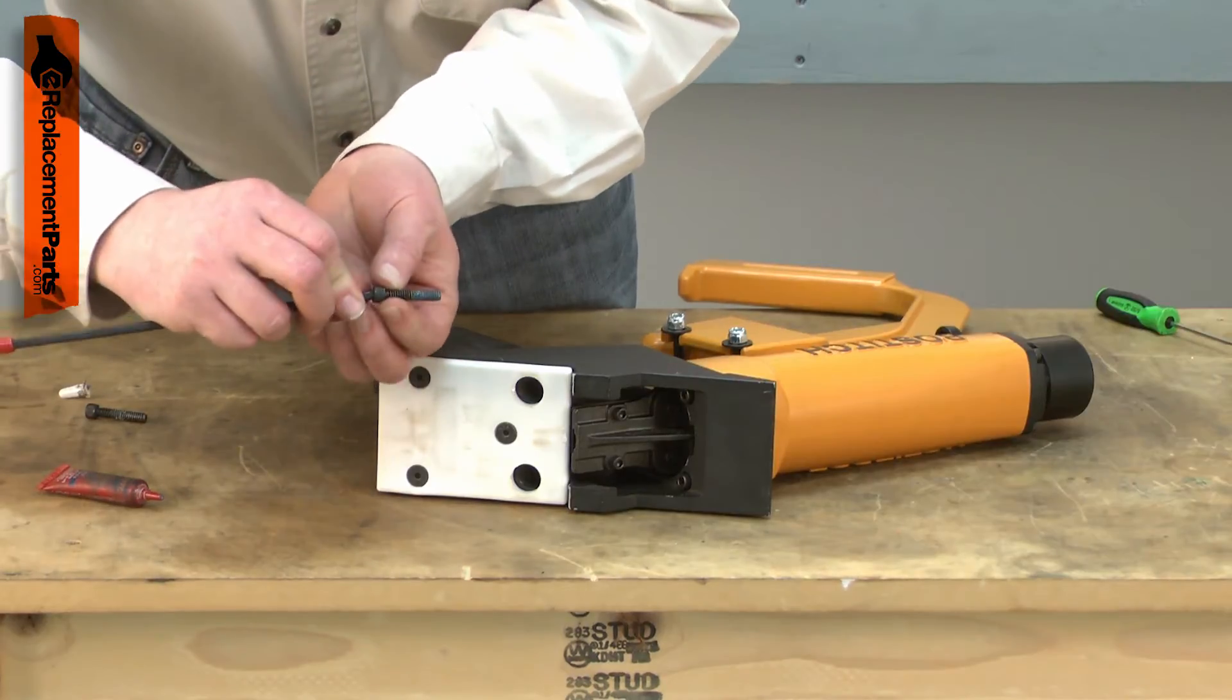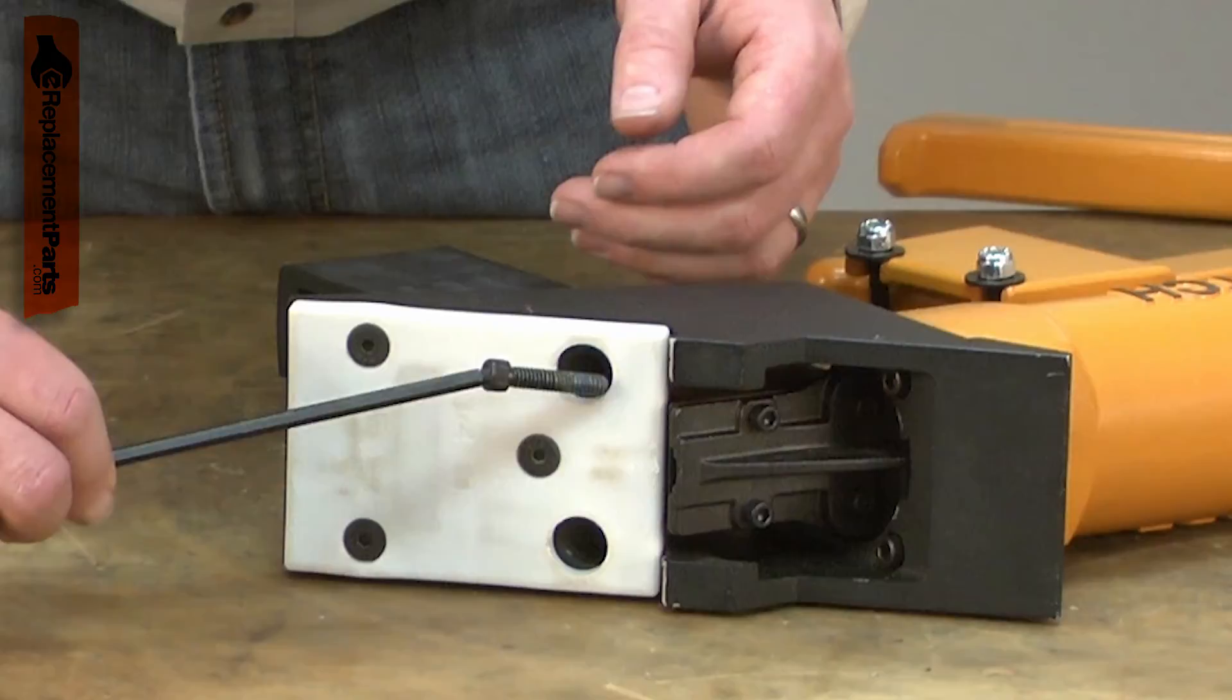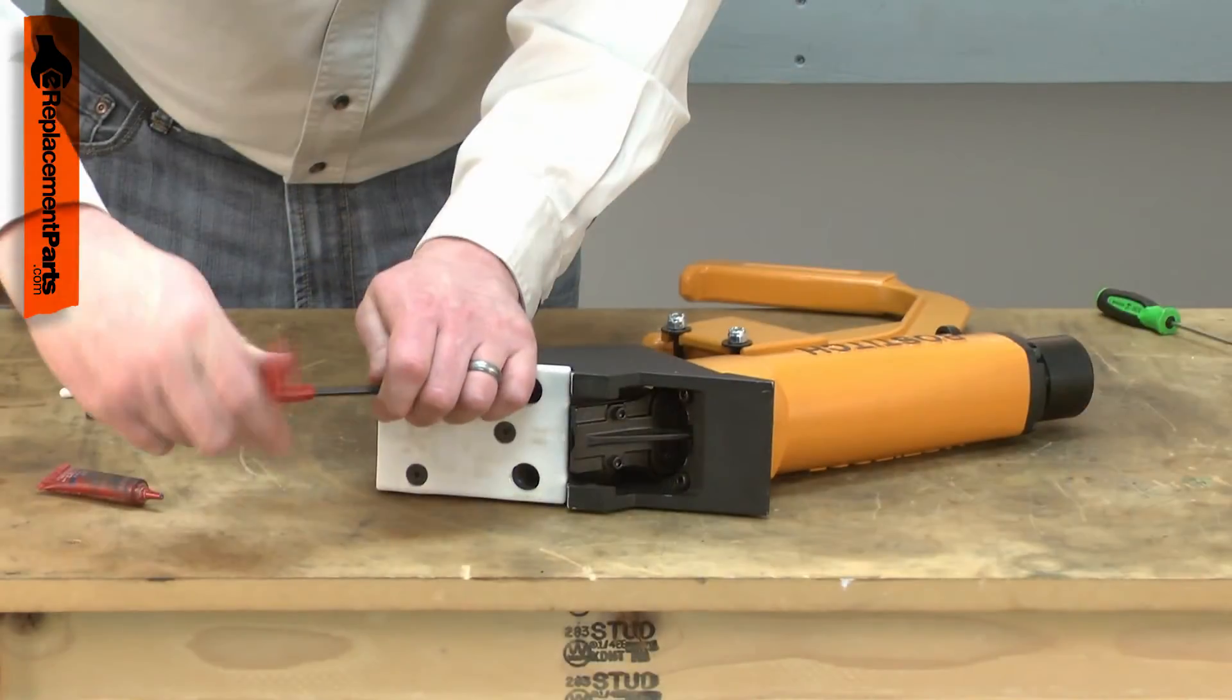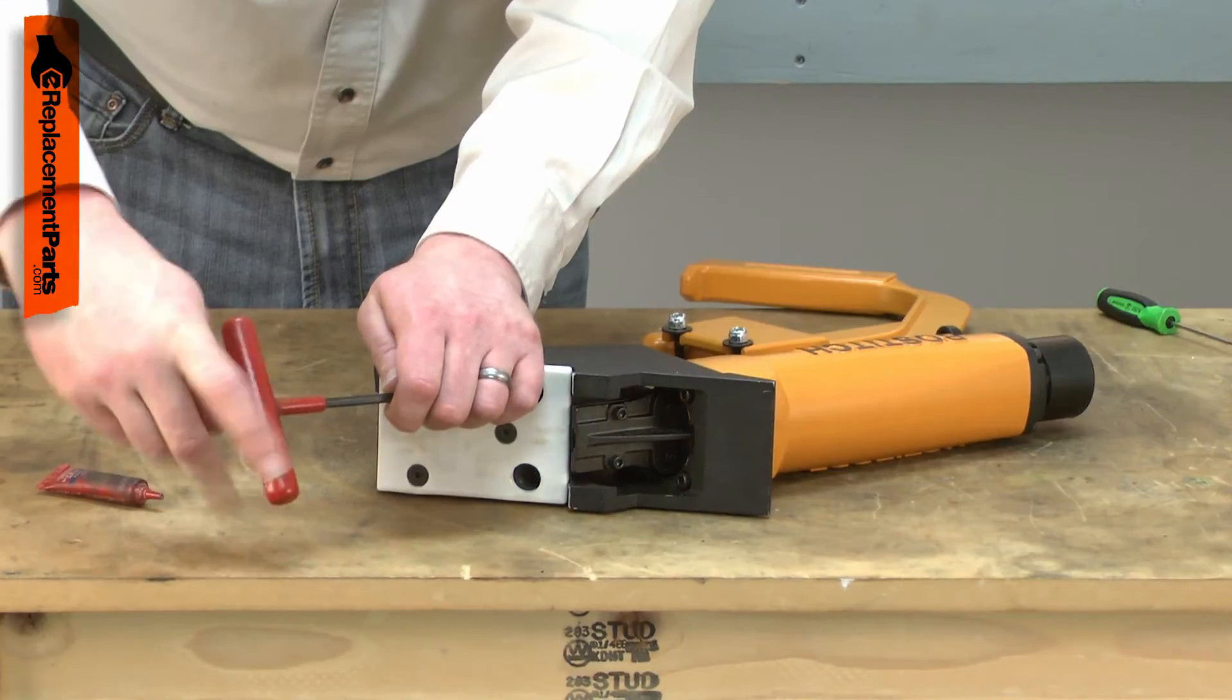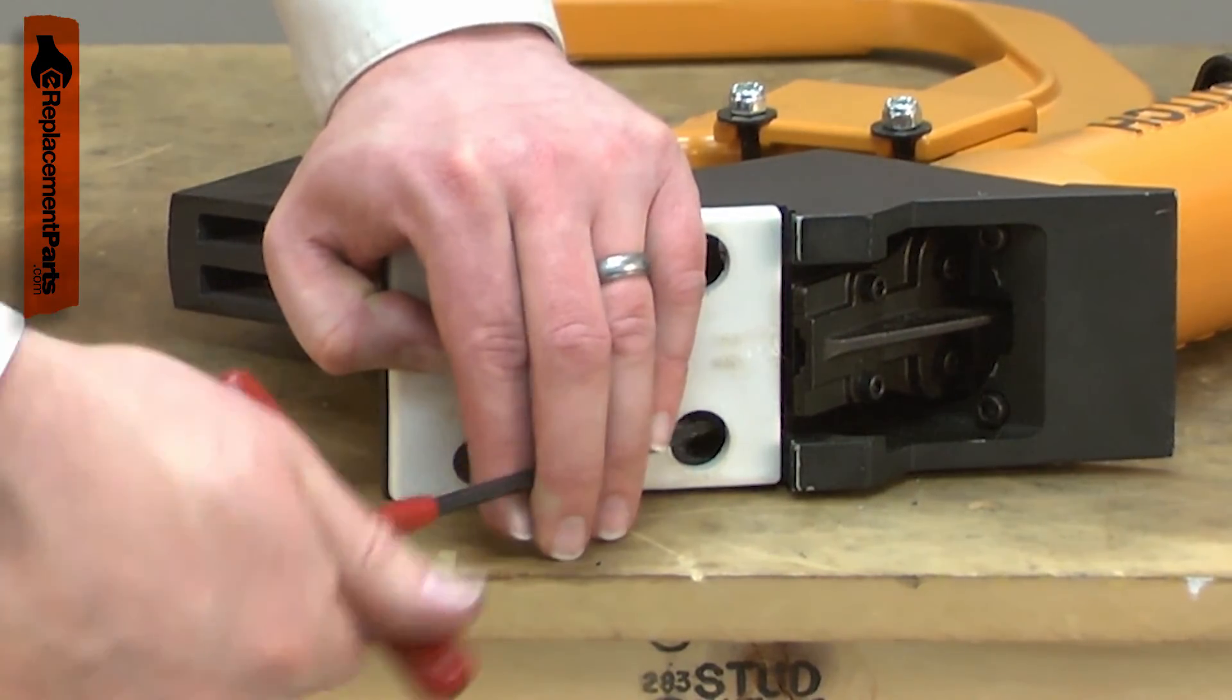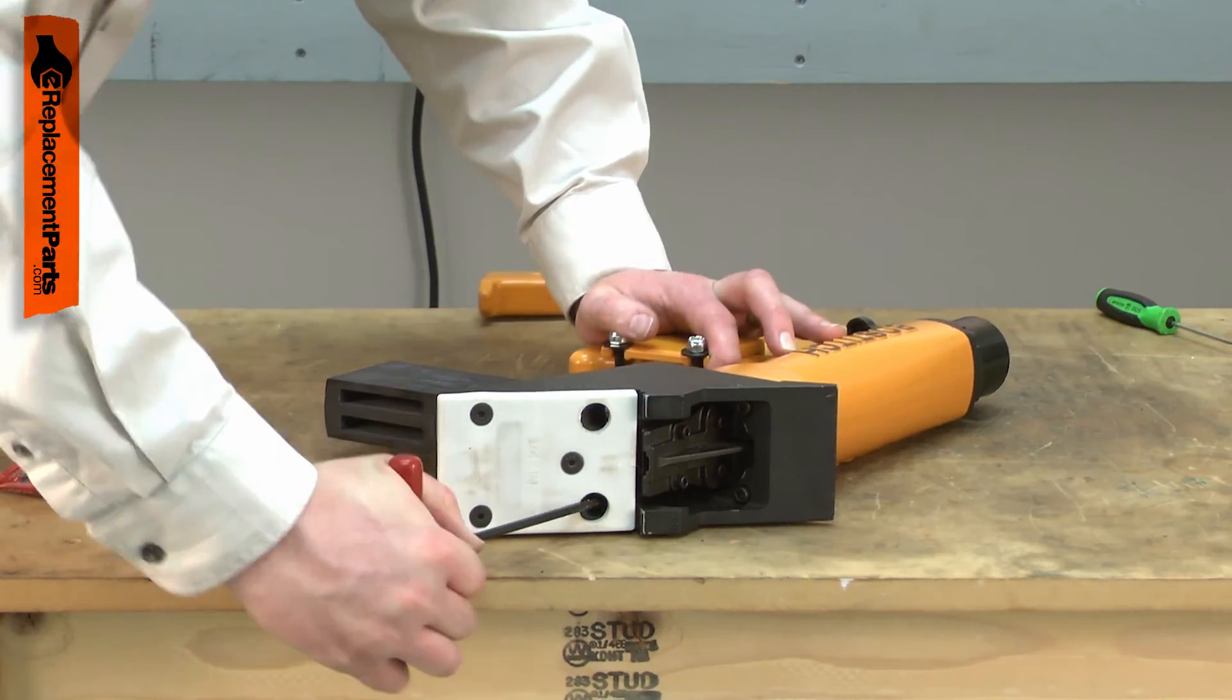Now the two blind screws through the base. These can be a little more tricky. And I'll completely tighten all four screws.